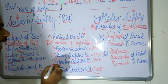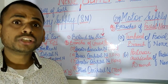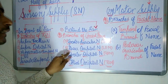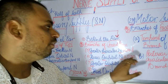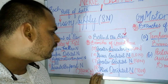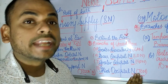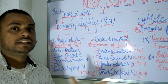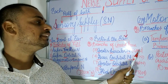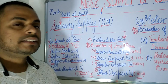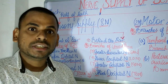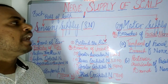For the nerves behind the ear, I've created another mnemonic using the initials of each nerve: GAN for Greater Auricular Nerve, LON for Lesser Occipital Nerve, GON for Greater Occipital Nerve, and TON for Third Occipital Nerve. So the mnemonic is GAN, LON, GON, TON — helping you easily recall and write these nerves in exams and MCQs.